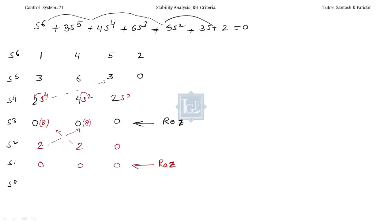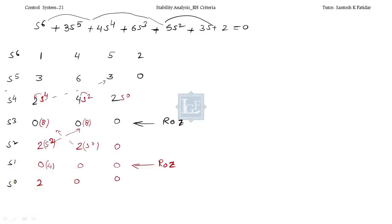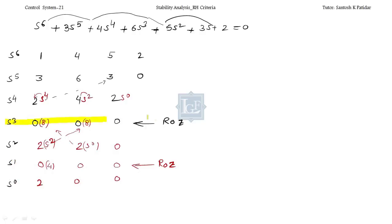Now the analysis starts. This is the first column. In the first column there is no sign change, but we have repetition of ROZ — twice. The first ROZ is here and the second ROZ is here; 2 ROZs we are getting. The condition is: how many poles will be symmetric? There will definitely be repetition because 2 times we are getting ROZ — so 4 poles will be repeated.